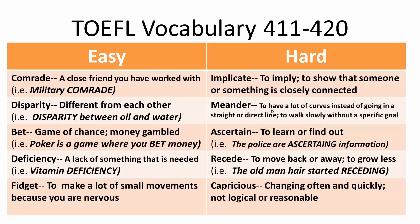Next: meander — to have a lot of curves instead of going in a straight or direct line; to walk slowly without a goal.